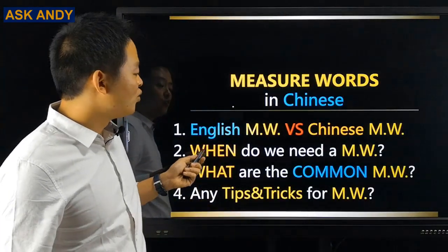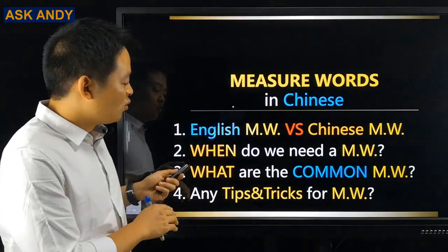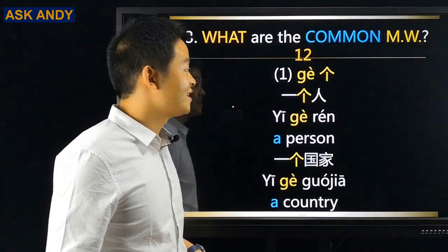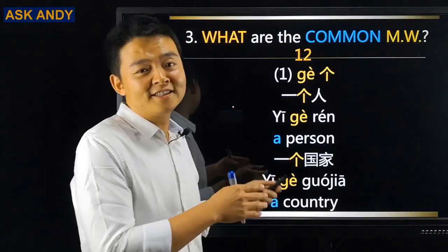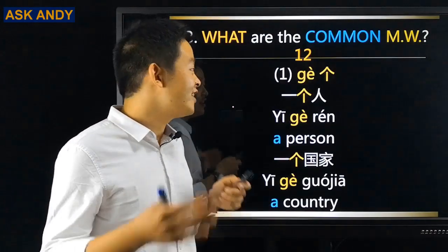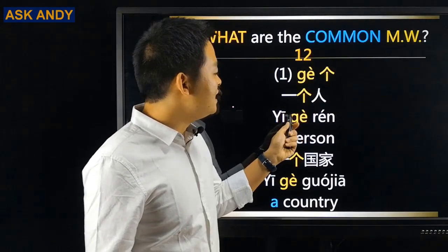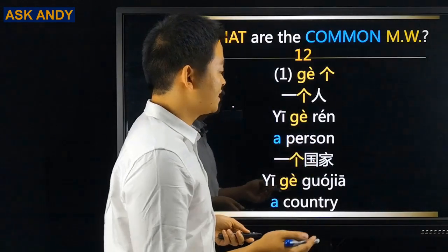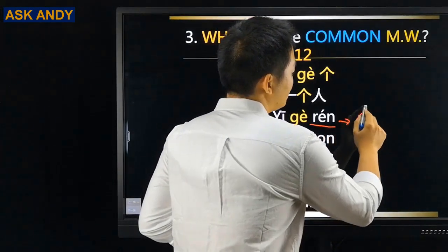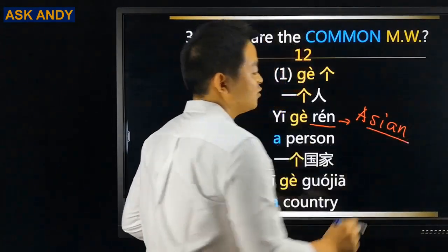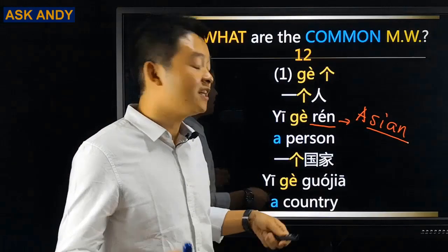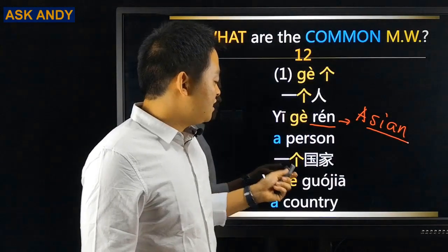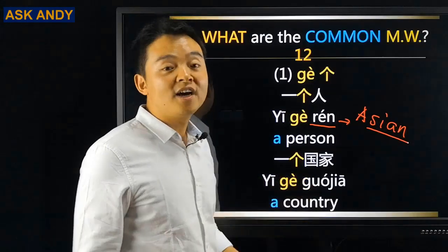Question number three: what are the common measure words in Chinese? I listed 12 for you. Number one: 个 — this is the most common measure word you will see and hear in Chinese. For example, 一个人 (a person) and 一个国家 (a country).